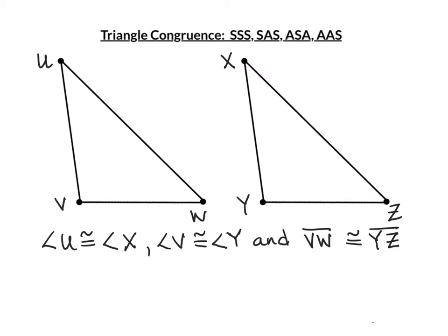The last technique for today is Angle-Angle-Side. Again, the order is super important. Notice that with Angle-Angle-Side, the side is not between the angles — it is not included. For example: angle U congruent to angle X, angle V congruent to angle Y, and VW congruent to YZ. In order, we have an angle, an angle, and a side — in the same corresponding order in both triangles.